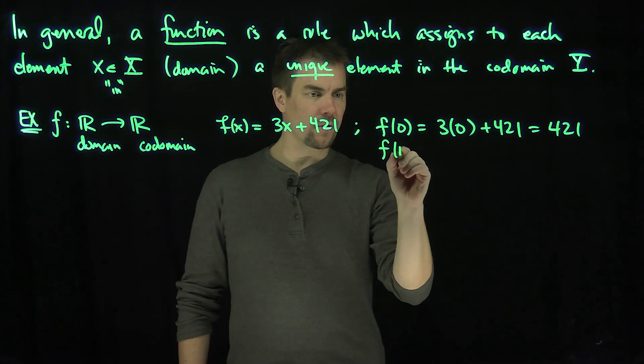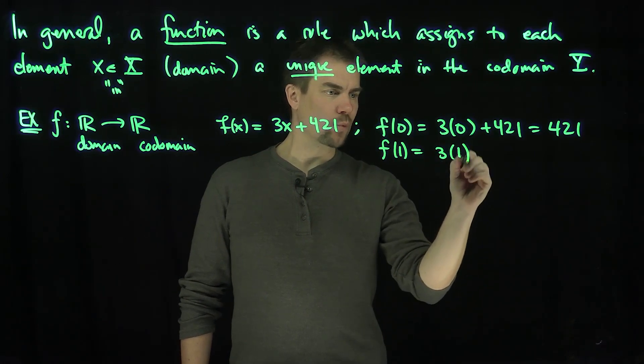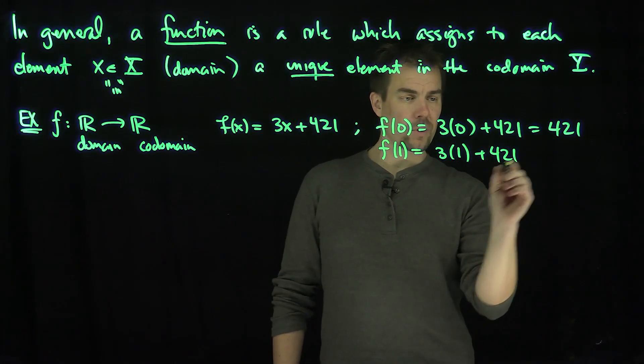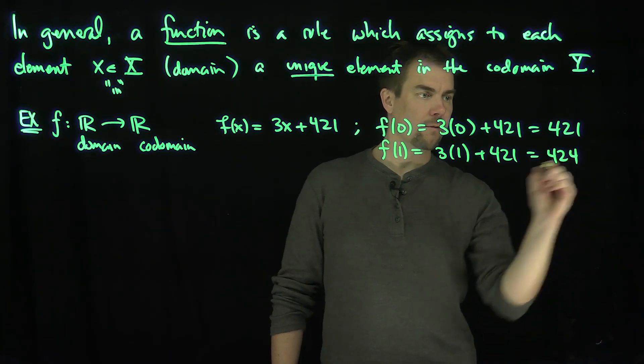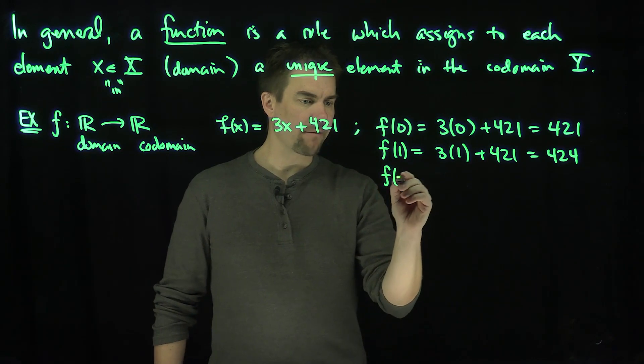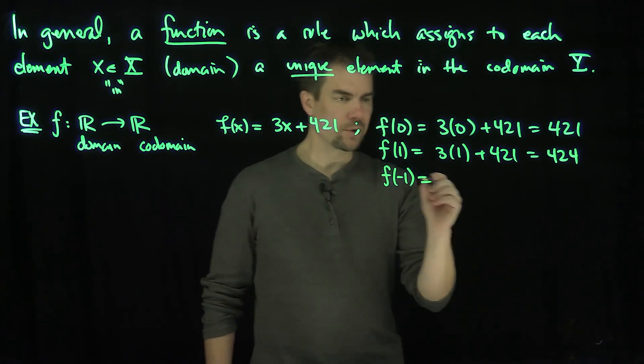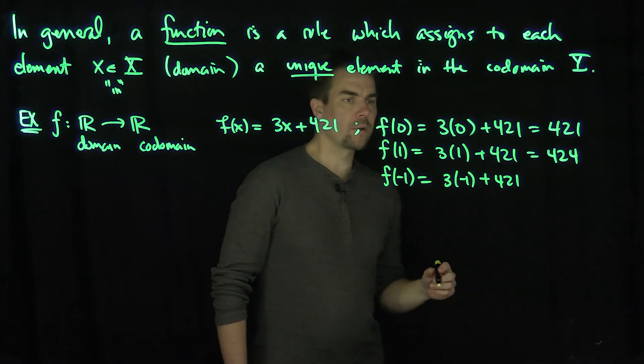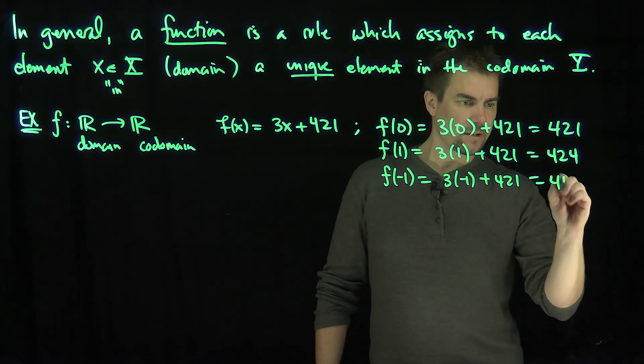If I was to plug one into this function, I would have 3 times 1 plus 421. So this will be 3 and 421, that's going to be 424. I can also plug in negative numbers to this expression over here. So I have f(-1) is equal to 3 times -1 plus 421, right? And that'll be 418.